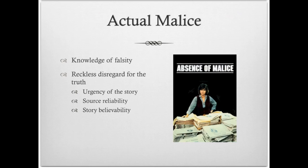One is the urgency of the story — if you're doing a breaking news story, that's going to give you a level of protection. The second is source reliability: how reliable is the source that you got the information from? That can provide you with protection. And then there's whether the story is believable — is this something realistic that other people will find is something you would expect of the other person given their reputation?